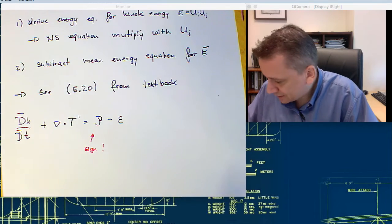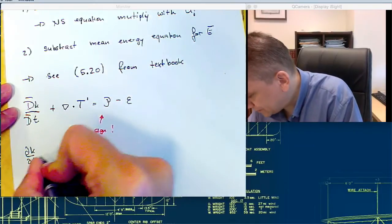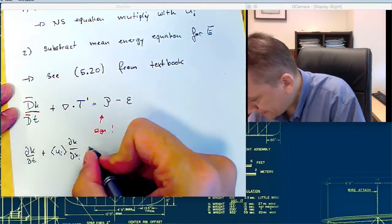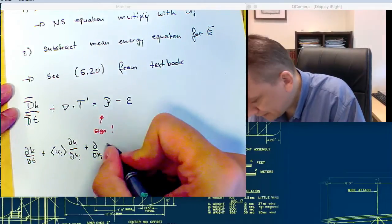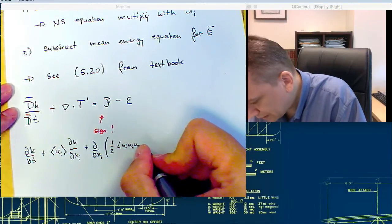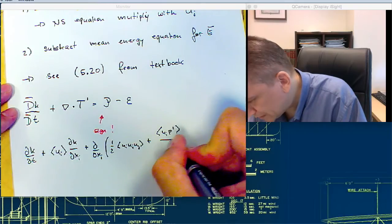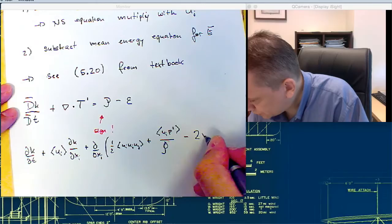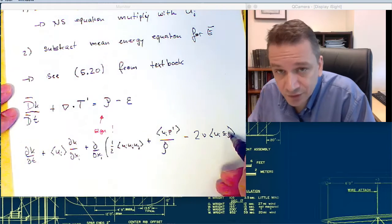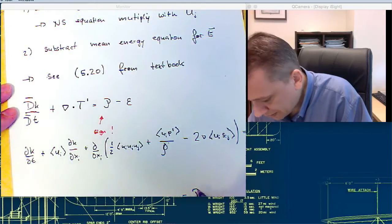I'm going to write it out again and see how these terms look like. So I have dk dt plus ui dk dxi plus ddxi one-half ui uj uj, plus ui p prime over rho minus 2 nu ui sij, lowercase sij because it's only acting on the fluctuating part, is equal P minus epsilon.